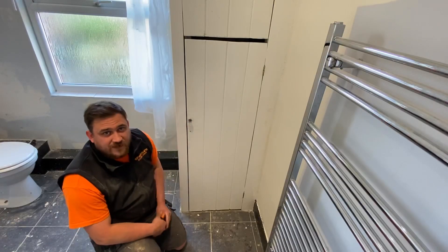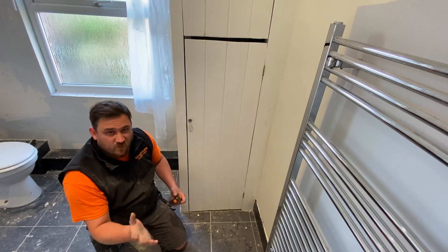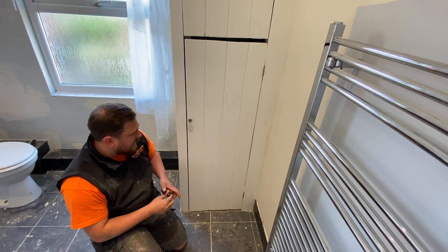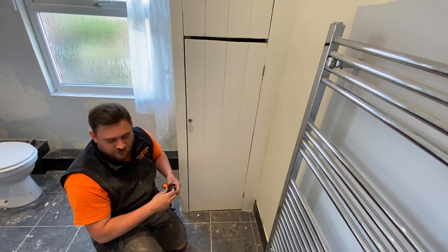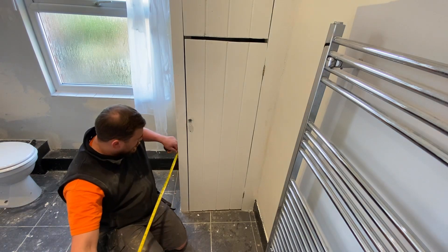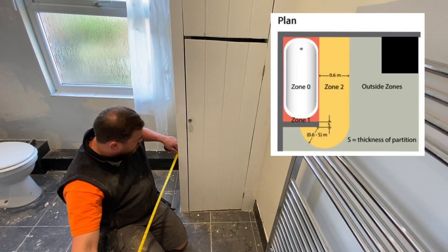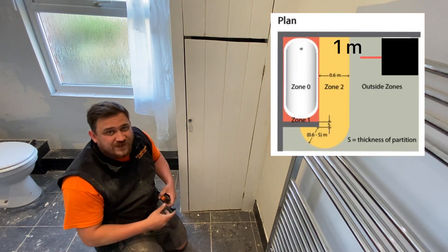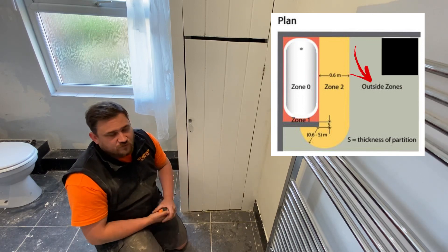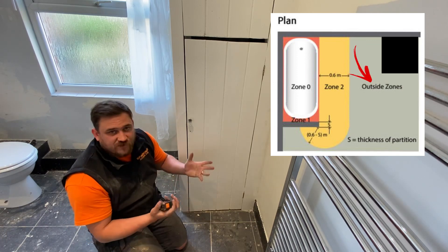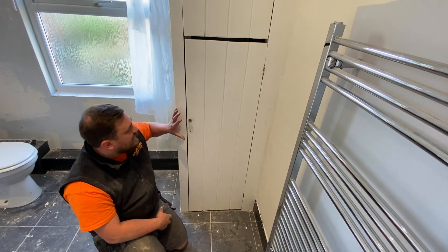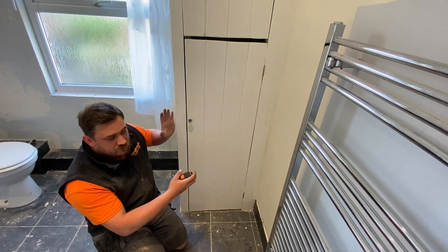We have our airing cupboard here in the bathroom. What we're going to do first is measure from the edge of the bathtub to see where, in relation to the zones, this airing cupboard falls. It's actually well over a meter away from the edge of zone one, so we're actually outside of the zones altogether. General rules apply, as per the other video.